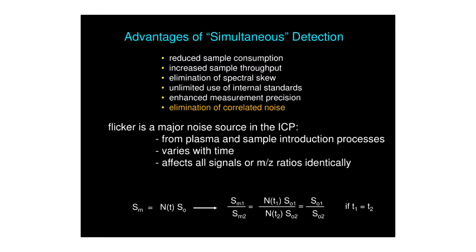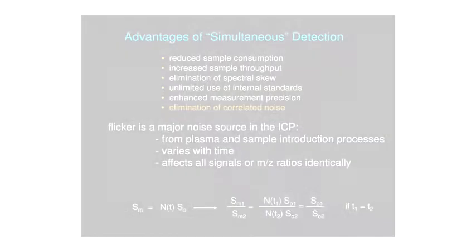If you're looking at two different isotopes of the same element and trying to match them, with a sequential system some period of time passes before the second isotope can be recorded, and the intensity has changed either up or down depending on where you are on the peak. That introduces spectral skew, which skews the isotope ratios. With a truly simultaneous measurement technique, that problem vanishes.